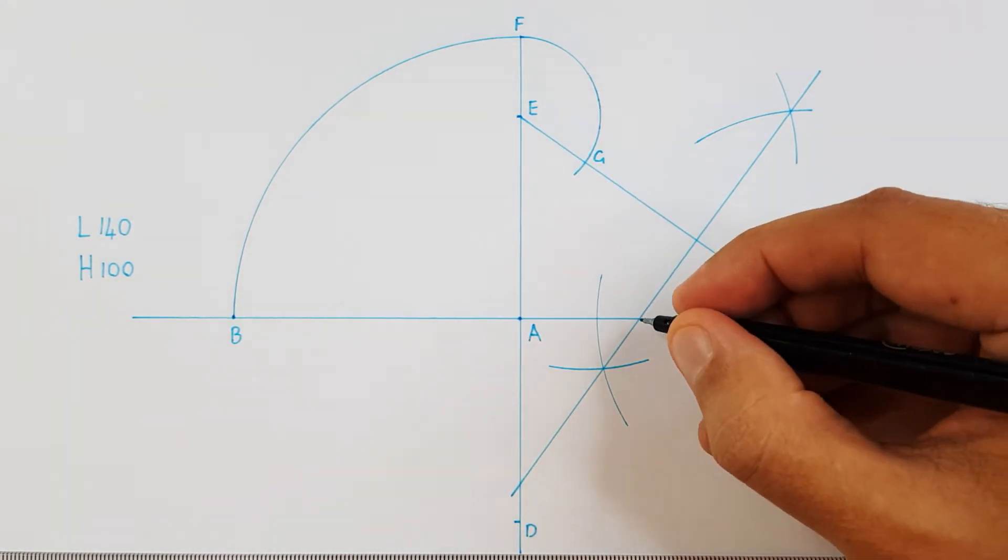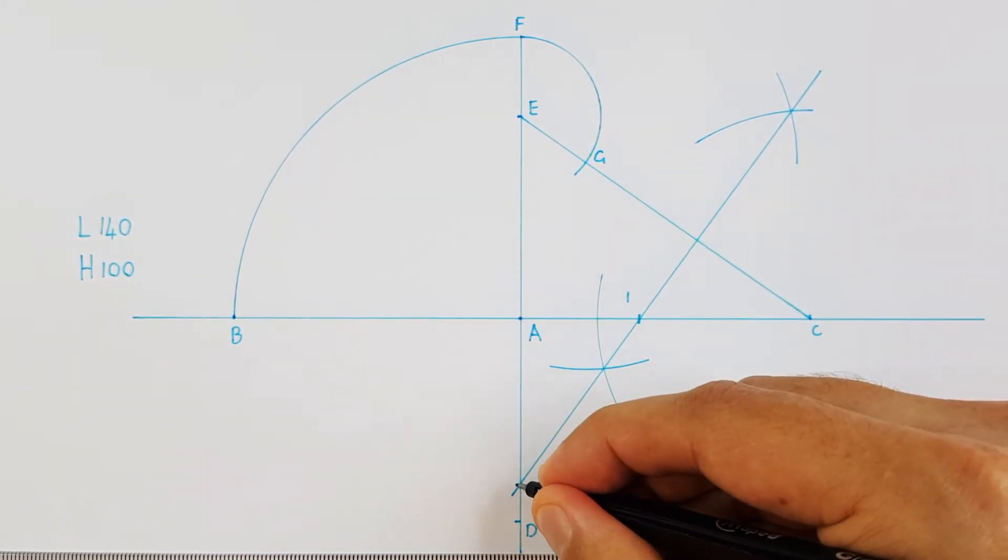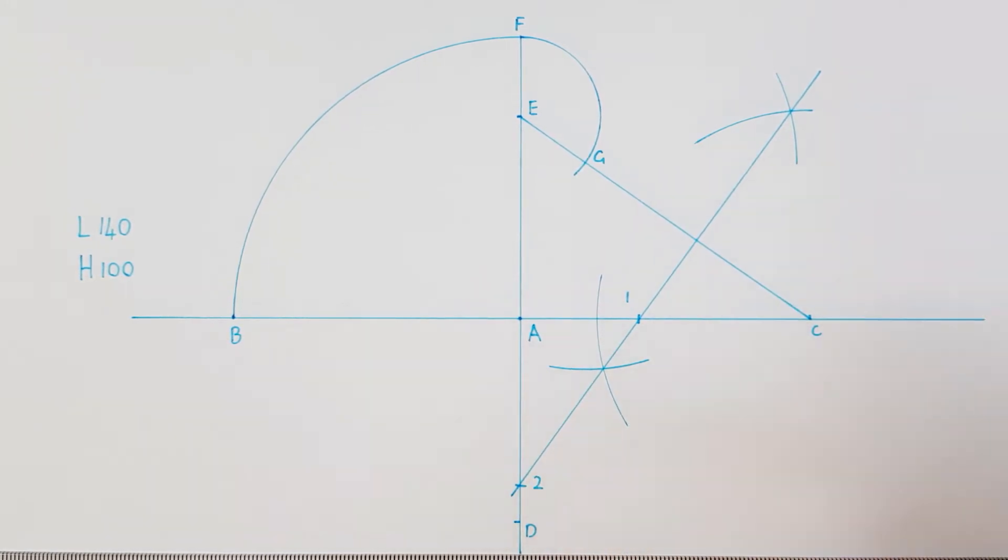Where it sections your major axis, label that as point 1. And where it sections your minor axis, label that as point 2.